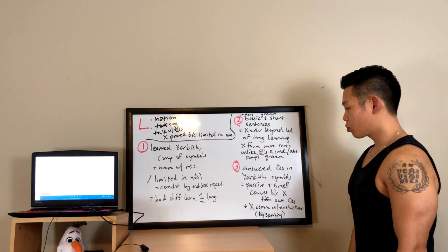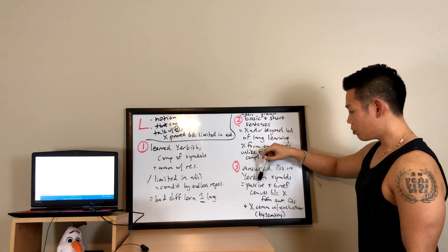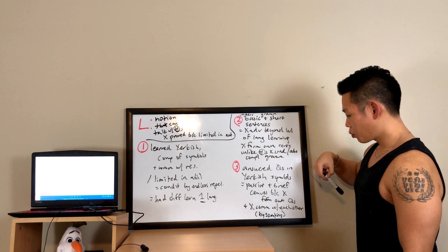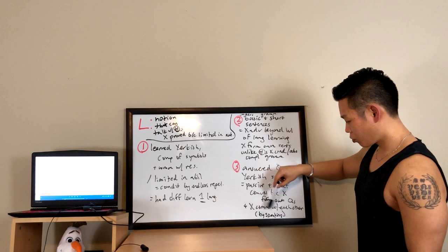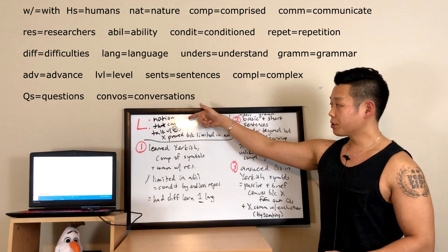The primates did learn to respond to human questions, but these answers weren't in speech form — they were translated in Yerkish as symbols. These so-called conversations were passive, with primates like Lana responding yet not being able to form their own questions or hold long conversations. Nor could the primates communicate with each other in any recognizable form. This is much unlike human children who can do so at an early age.